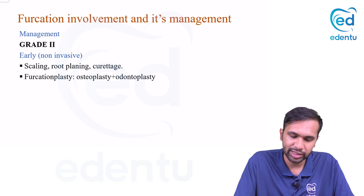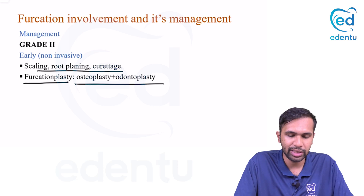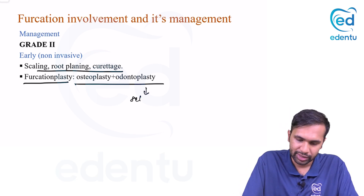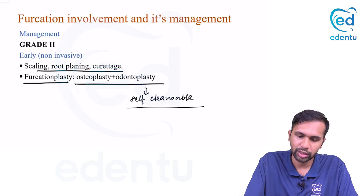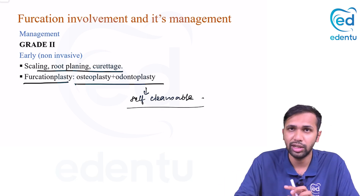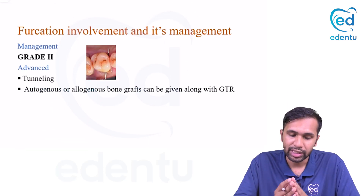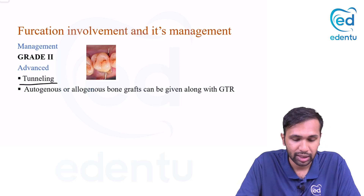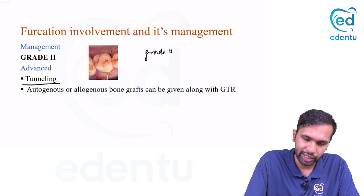For grade two, early non-invasive management includes scaling and root planing and curettage. You can also perform furcationplasty, which combines osteoplasty and odontoplasty to make the furcation self-cleanseable — similar to enameloplasty — and to remove any contributing local factors.